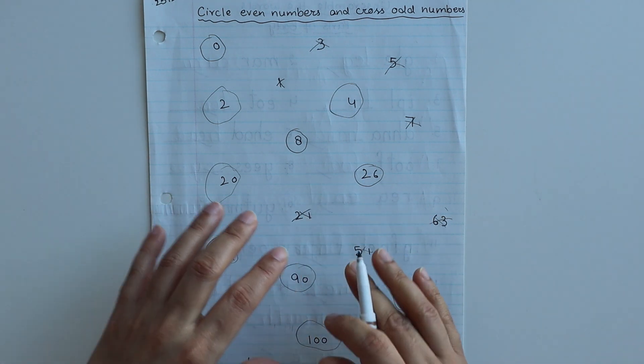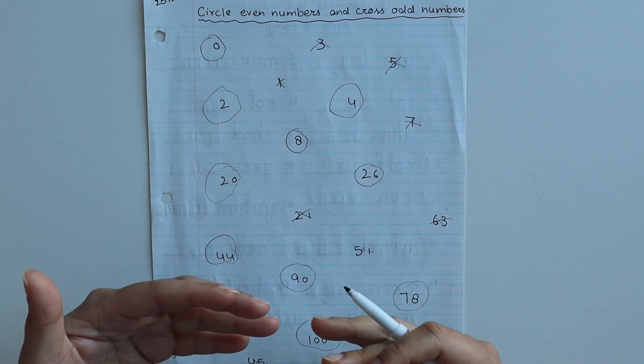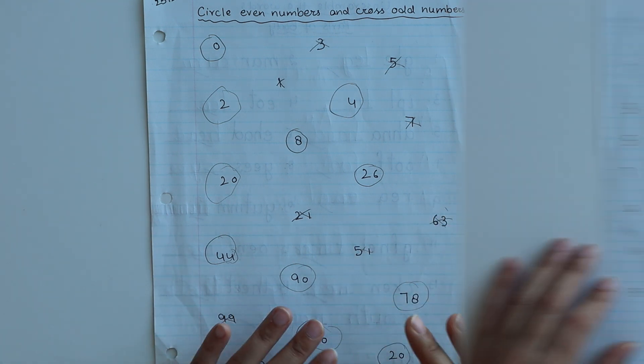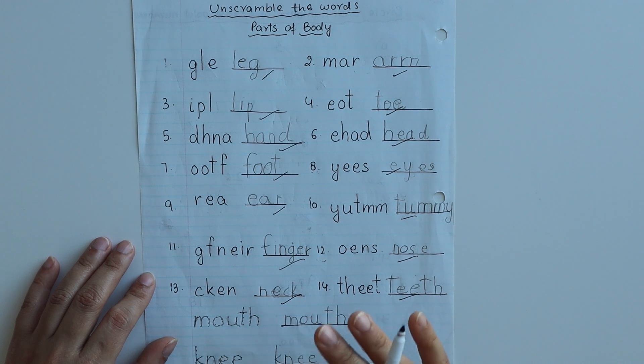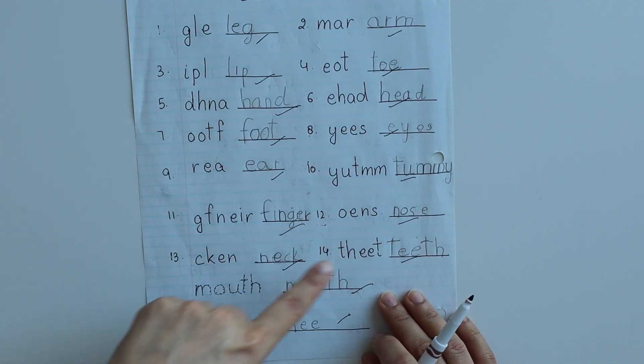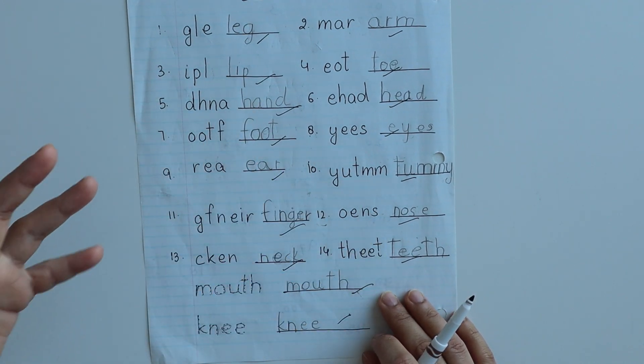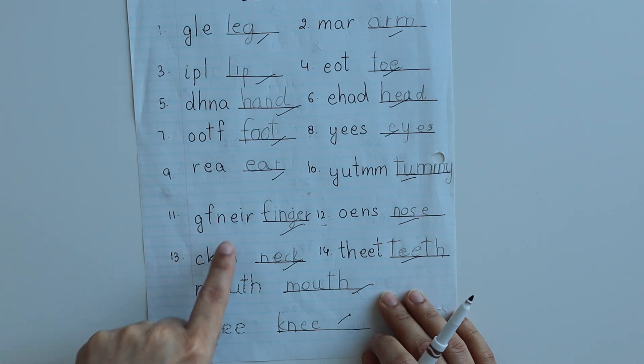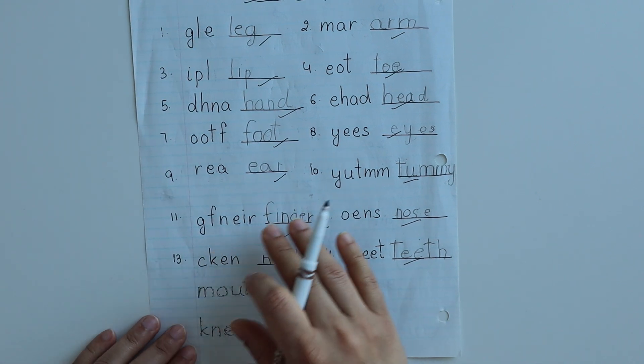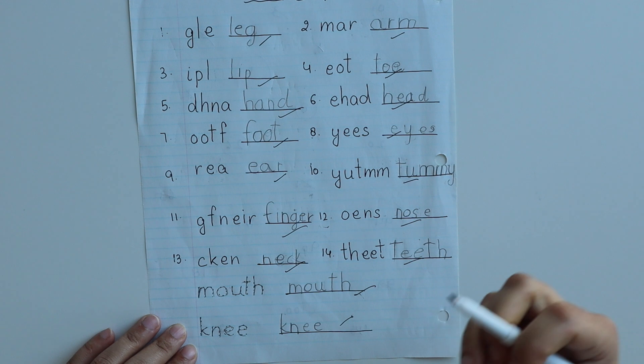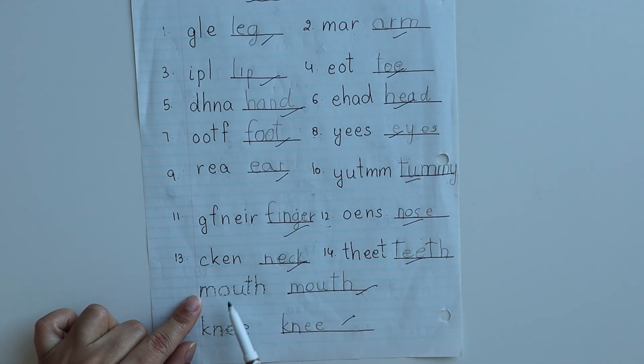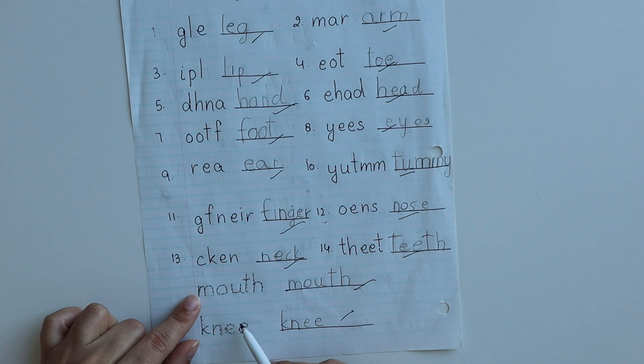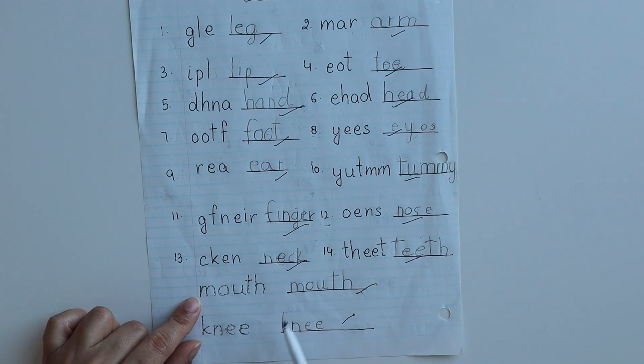Next we have unscramble the words, and this worksheet is for parts of the body. I've scrambled the spellings of body parts and then written the correct spelling. With this I've also introduced two new words. Chia simply traced them and then wrote them.